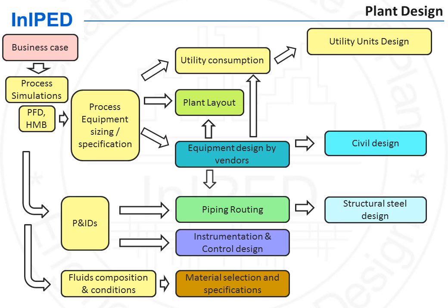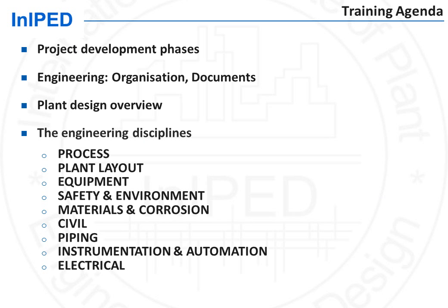That's it! In a nutshell, this is the sequence of work between disciplines — each represented by a different color — for the design of a plant. As explained, we will go into more details in the subsequent modules, which will each cover one discipline.